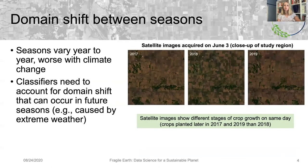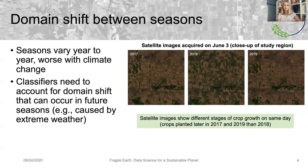The challenge for machine learning models is that seasons will vary from year to year, and these variations are only going to increase with climate change, so our classifiers need to be able to account for the domain shift that can occur in future seasons. These three images show the same location in Illinois on June 3rd, taken in 2017, 2018, and 2019. You can clearly see that the fields in this area are in different growth stages in each image, since crops were planted later in both 2017 and 2019 compared to 2018. So on June 3rd 2018 we see lots of vegetation or green up, but most fields are still bare at the same time in 2019.